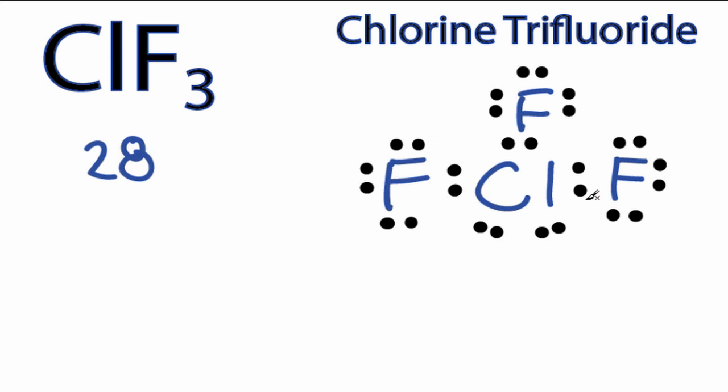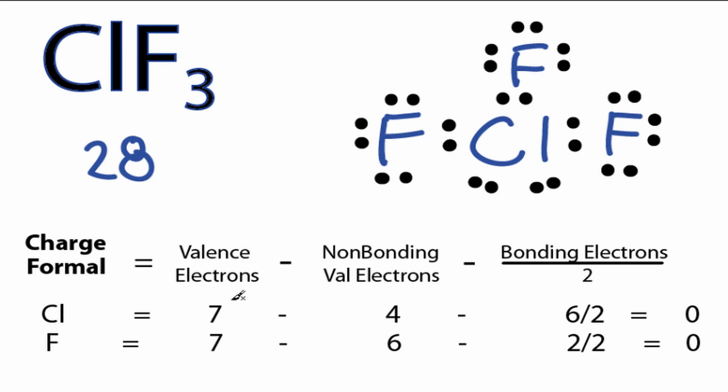Let's check our formal charges and make sure this is the best structure for ClF3. We can see on the periodic table, chlorine has 7 valence electrons. It has 4 non-bonding valence electrons on the Lewis structure here, and then 6 that are involved in chemical bonds, which we divide by 2. 7 minus 4 minus 3 is 0.